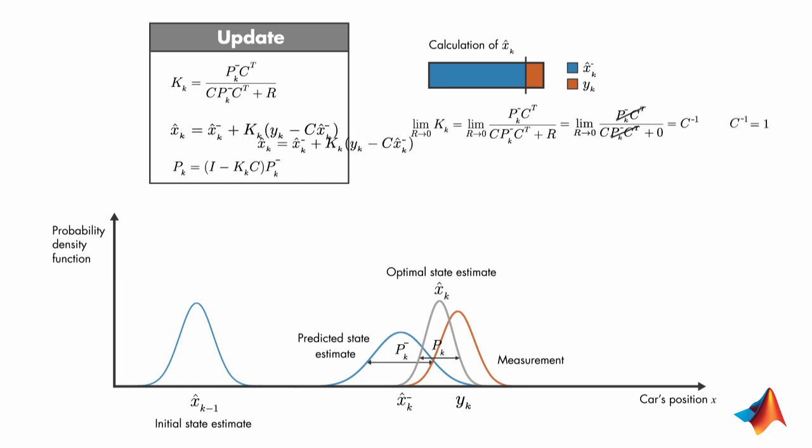Plugging K and inverse of C into the a posteriori state estimate shows that x hat k is equal to y k, so the calculation comes from the measurement only as expected.